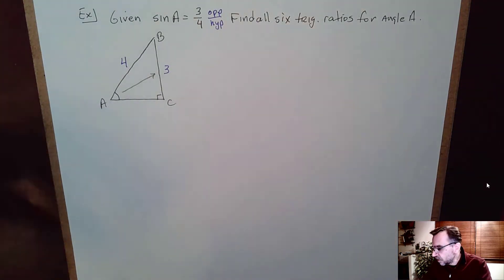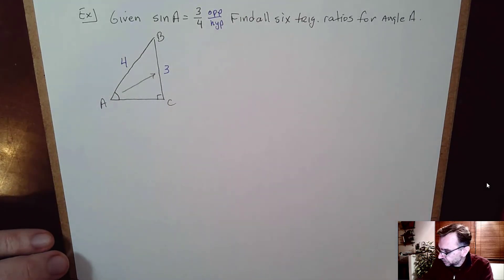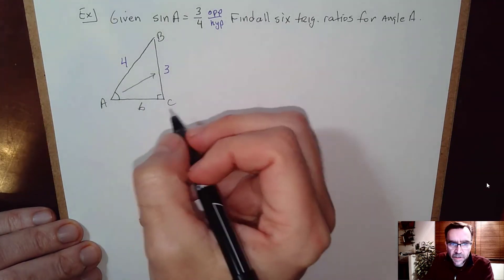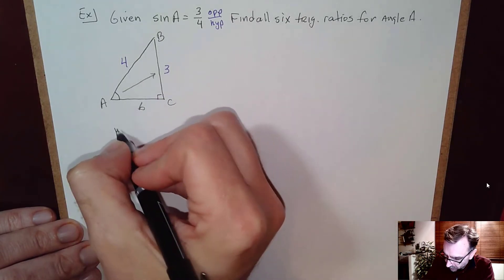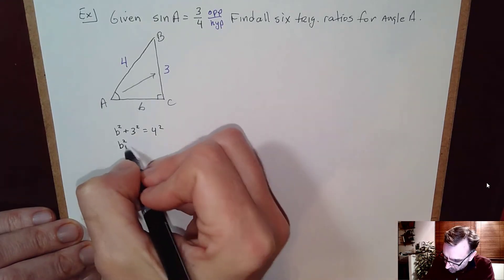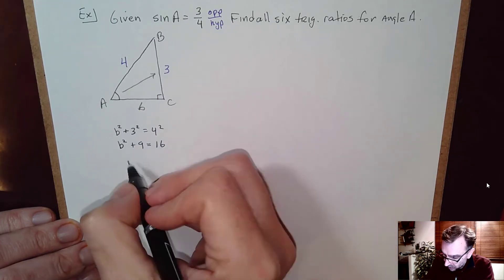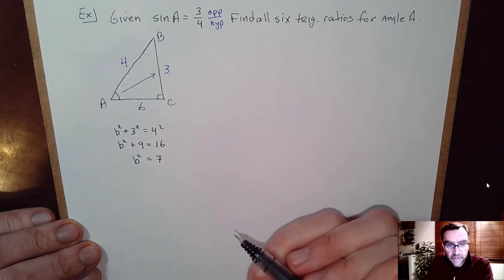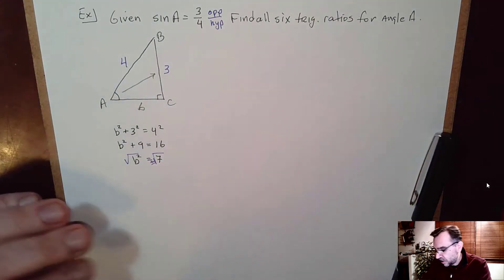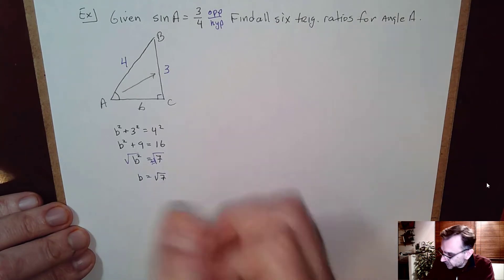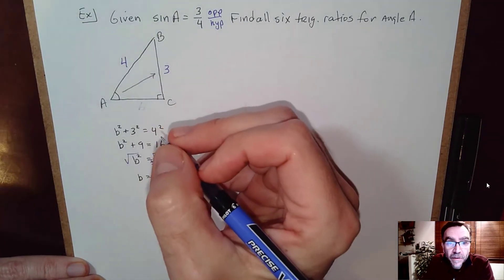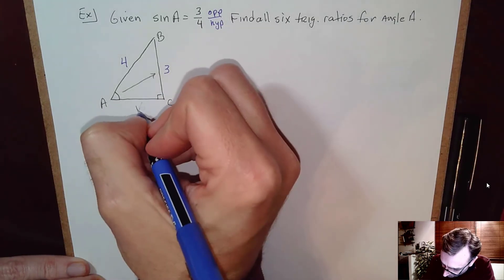To find all six trig ratios you need all sides of the right triangle, so we need to find side B using the Pythagorean theorem: B² + 3² = 4². So B² + 9 = 16, meaning B² = 7, and therefore B = √7. Now I can fill in that missing third leg as √7.